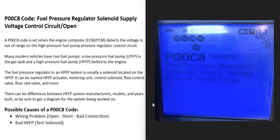Today I'm talking about the P00C8 code — what it is and how you go about fixing it. The P00C8 code is a fuel pressure regulator solenoid supply voltage control circuit open.